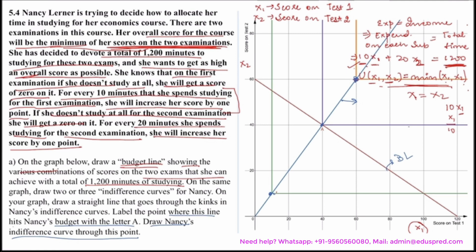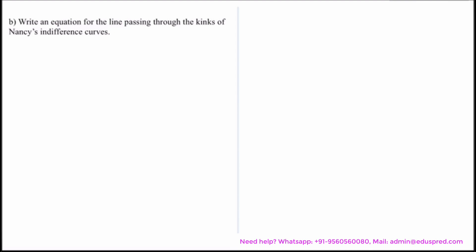The question was straightforward — all you have to do is first understand all the information given and write it in your own terms. Once we decoded the entire information it was easy to solve. Moving on to the next part: we are asked to write an equation for the line that passes through the kinks of Nancy's indifference curves. Nancy's utility is minimum of x1, x2, and we know the kinks happen at the place where x1 equals x2 — where the consumer is consuming equal quantities of both goods. So the kink line equation is x1 = x2.